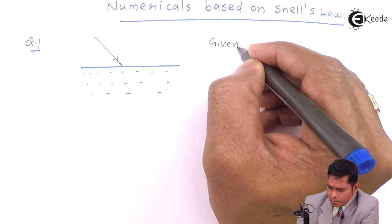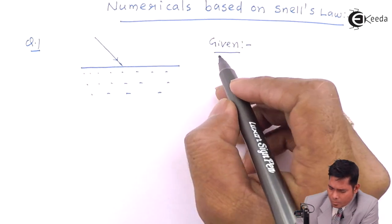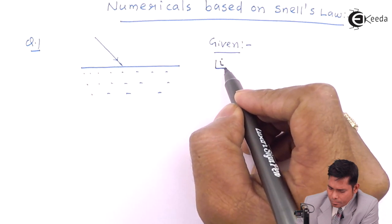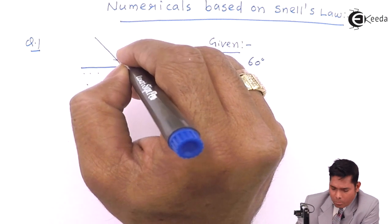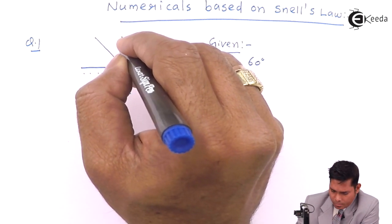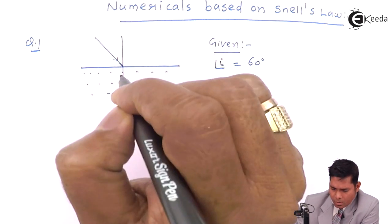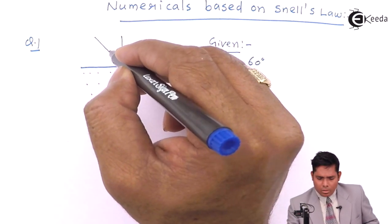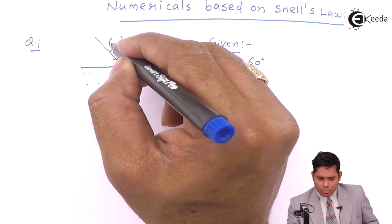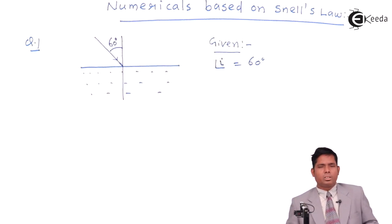What is given? At this point we will draw a normal. The angle of incidence is the angle between the incident ray and the normal. So this is 60 degrees.